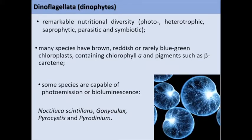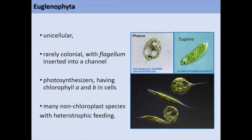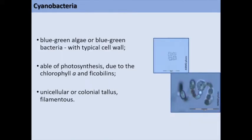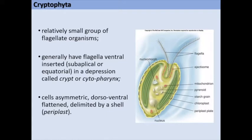Some species are capable of bioluminescence, such as Noctiluca scintillans, Goniaulax, Pyrocystis and Pyridinia. The euglenophytes are another group of unicellular microalgae, rarely colonial, with flagellum inserted into a channel. They are photosynthesizers, having chlorophyll A and B in cells, and many non-chloroplast species with heterotrophic feeding. The cyanobacteria are blue-green algae with typical cell wall, able to photosynthesize due to chlorophyll A and phycobilin. They have unicellular or colonial thallus, which is sometimes filamentous. The cryptophytes are a relatively small group of flagellate organisms with flagella ventrally inserted in a depression called a crypt. The cells are asymmetric and ventral-flattened, delimited by a shell.